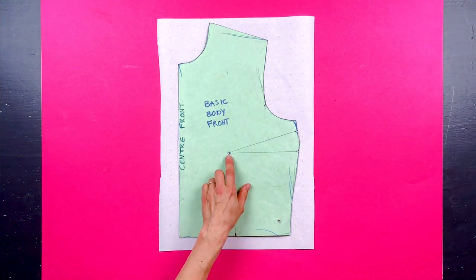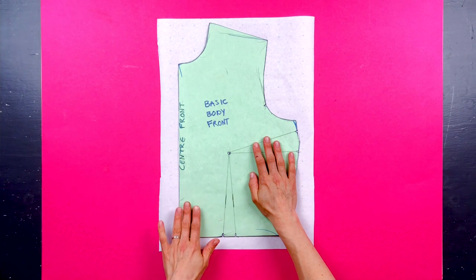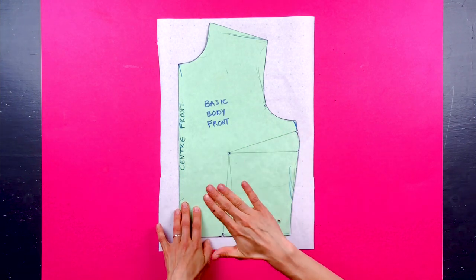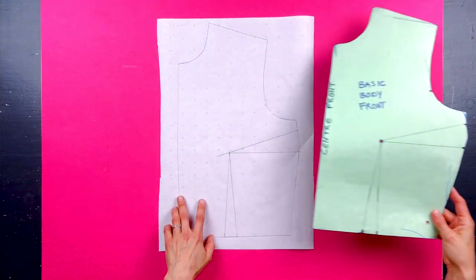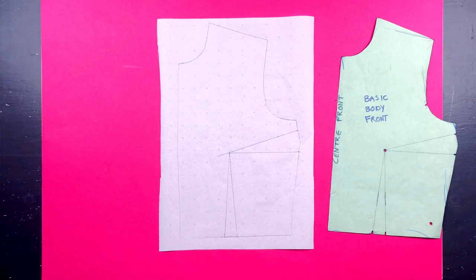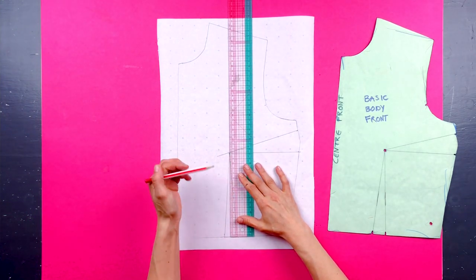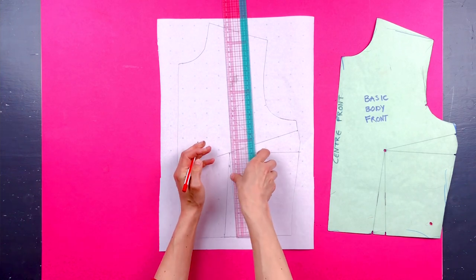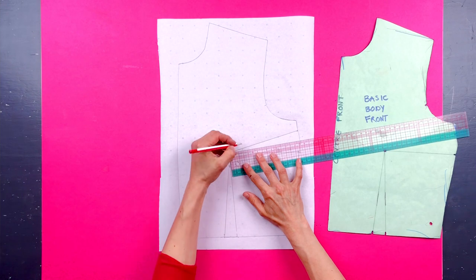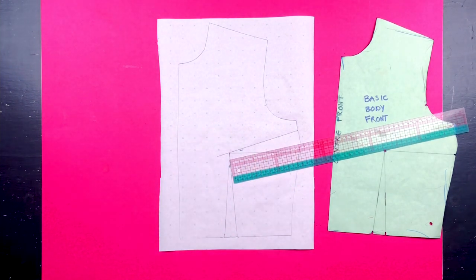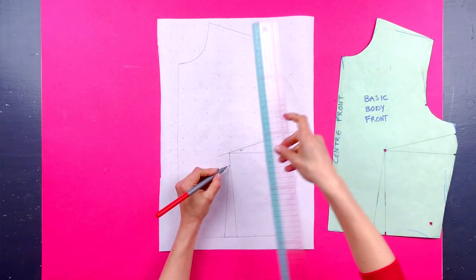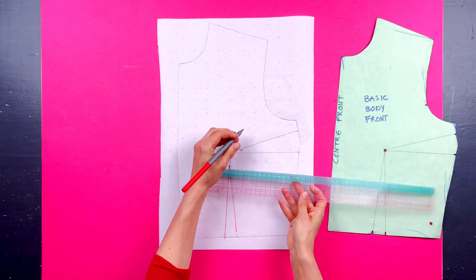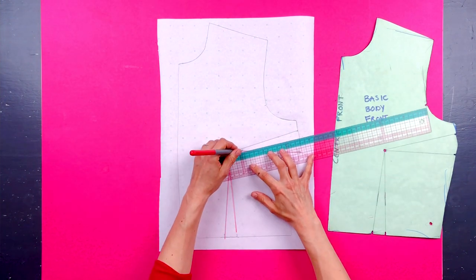I'm now going to share a little tip with you on the really important difference between your bust point on your block and on your final pattern. So on your block, your bust point is right in the middle where your waist dart and your bust dart meet. If you stitch it up like that, you end up with a really pointy, unflattering bust line. So what you always do is once you're ready to make your pattern, you mark a new bust point 2.5 centimeters, or roughly an inch, away from the original bust dart. So that's always right in the middle, and then you redraw your bust dart and your waist dart into that.